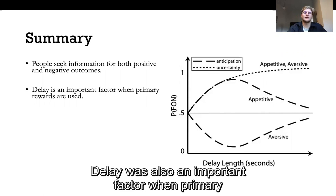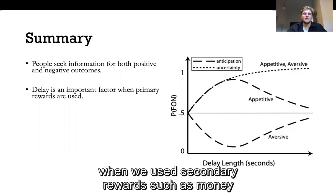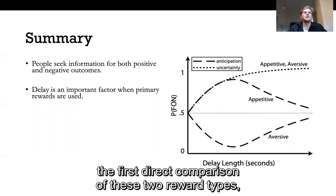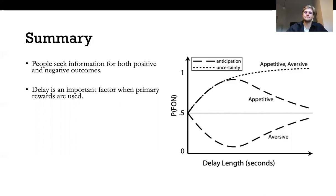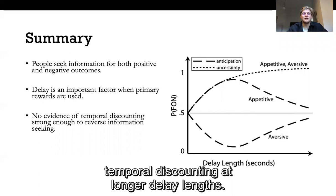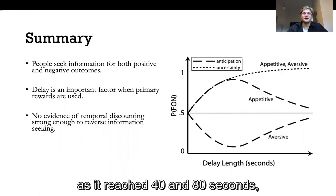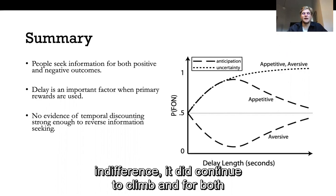Delay was also an important factor when primary rewards were used. It didn't appear to be very important when we use secondary rewards such as money but this is to our knowledge the first direct comparison of these two reward types, primary and secondary, and it also does support previous studies which showed an effect of delay using primary rewards.